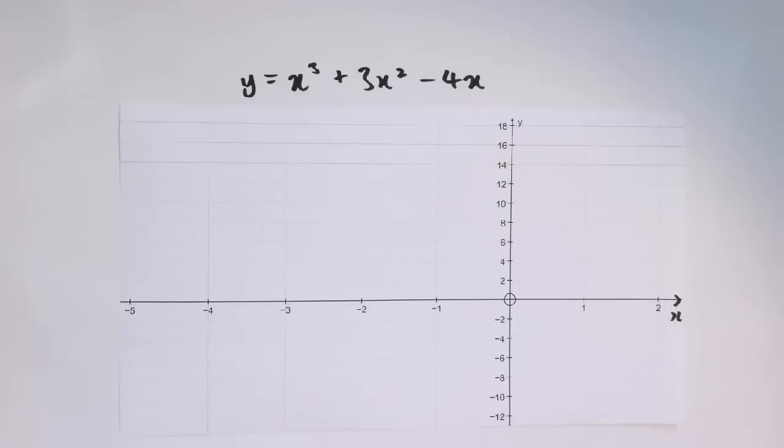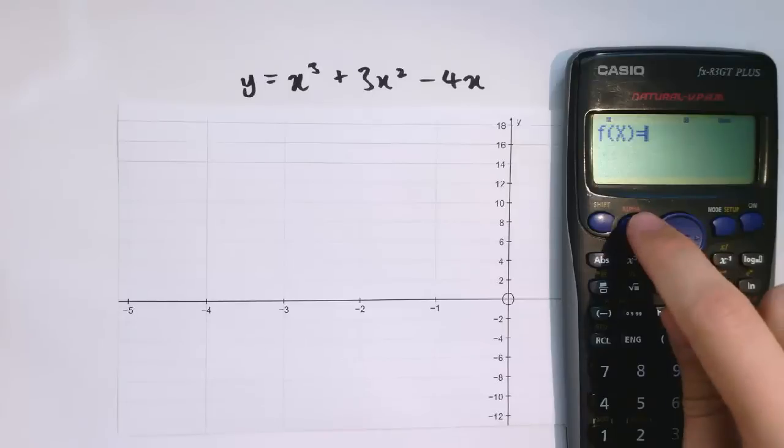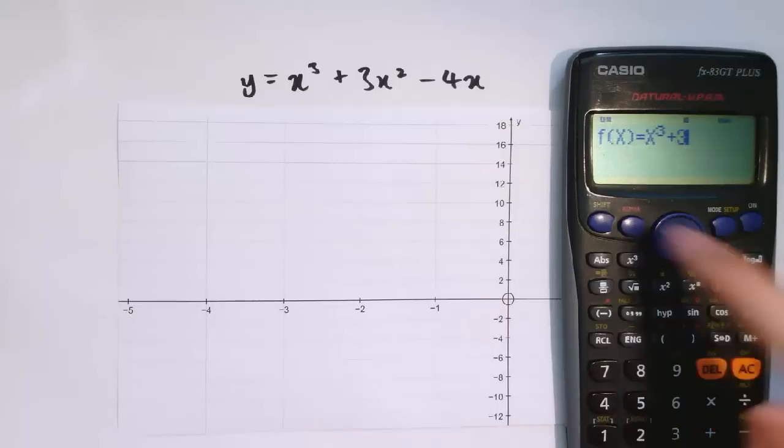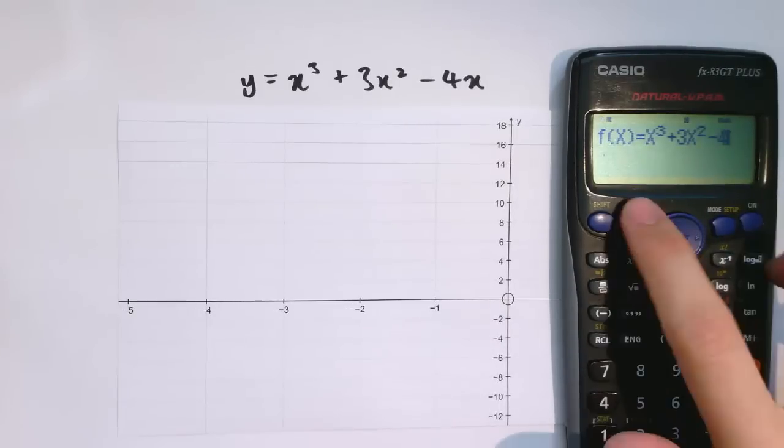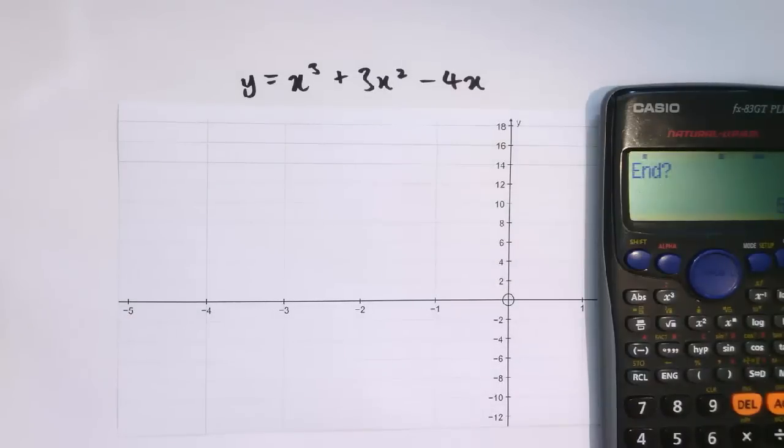Here's another example then. If I wanted to plot y equals x cubed plus 3x squared minus 4x, again, it's in that nice y equals a function of x form, so I can get my table function back on the calculator again and type in alpha x cubed plus 3x squared minus 4x. Now I've got axes here that start at minus 5 and they go up to 2, so let's do that.